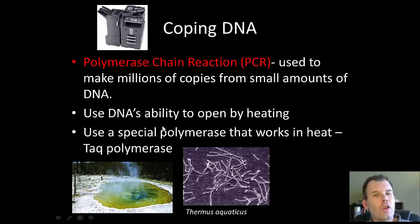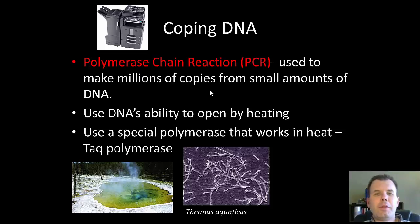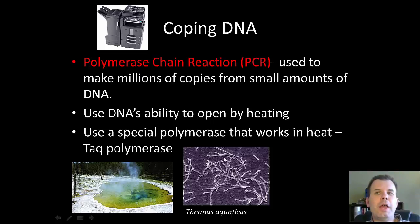On the topic of forensics, one problem is that at some crime scenes, you're very limited in how much DNA you can grab. Sometimes it's a very small amount, and the way we can make it usable is by making lots and lots of copies. The technique for this is called polymerase chain reaction, or PCR. It allows us to make millions and millions of copies of DNA from a very small amount. We use the DNA's ability to heat, open, and close, along with a special polymerase called Taq polymerase, isolated from a thermophilic bacteria called Thermus aquaticus.